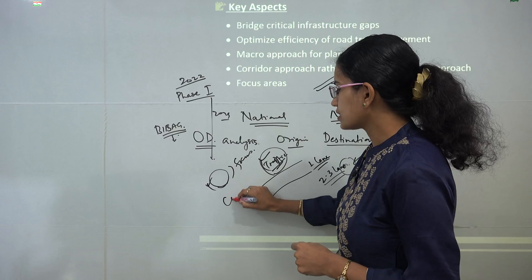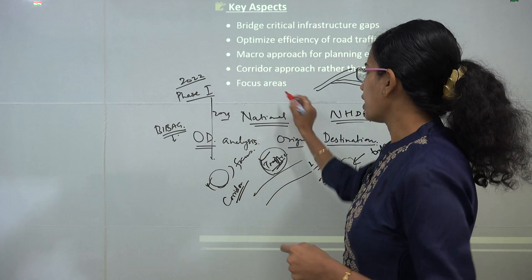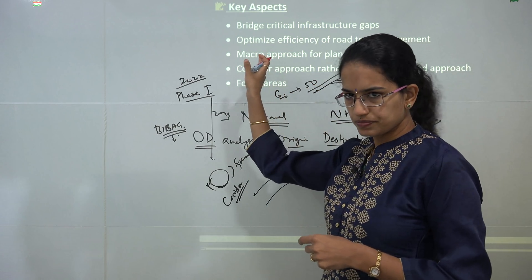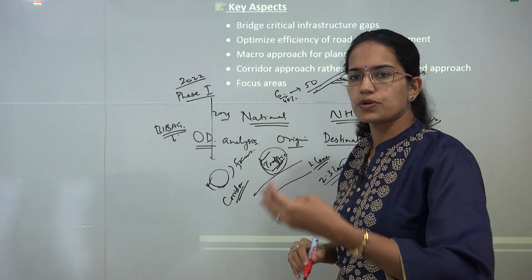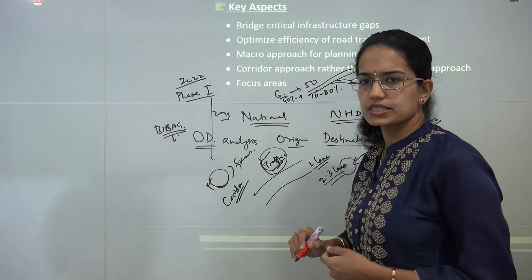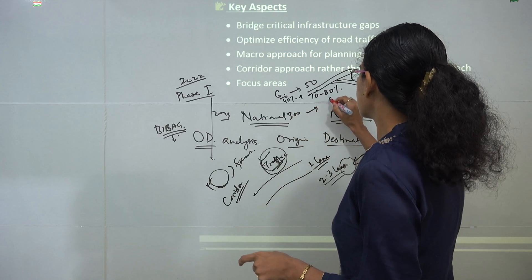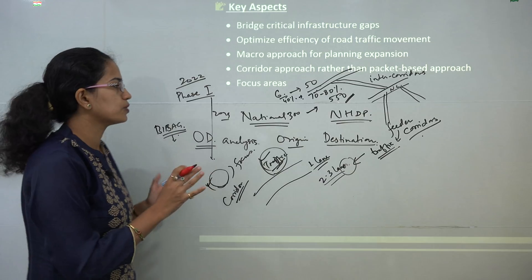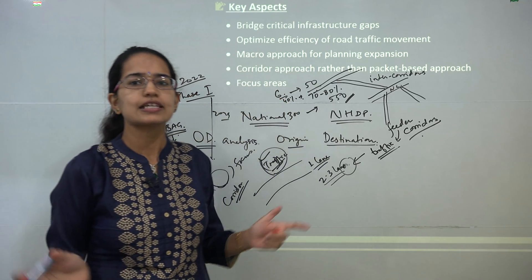The next important aspect is a corridor approach — we are trying to develop corridors of highways across India. As of now we have six major national corridors; these would be increased to 50 as per the Bharatmala project. Currently 40% of freight transport goes through these national corridors, and this is set to increase to 70–80%. Around 300 districts are connected with national corridors, and this is aimed to increase to 550.